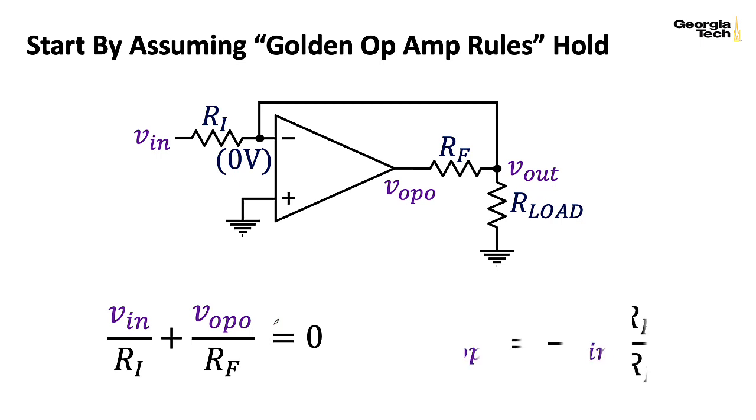Okay, so if I solve this equation, I get this expression, which looks like your standard inverting amplifier configuration for an op amp, if I think about VOPO here as the output. And that's not hard to visualize if you take this RF and redraw the circuit a little bit. Okay, so that's what happens when we assume that the golden op amp rules hold.